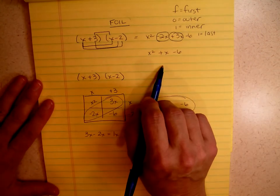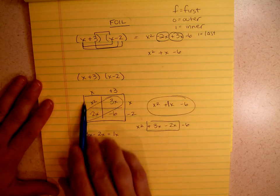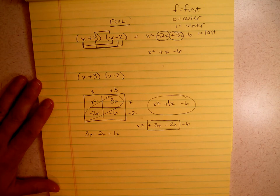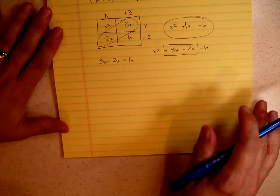So our answer is x squared plus x minus 6. That's exactly what we got from FOIL. I found it this way easier. If you find FOILing easier, go ahead and use FOILing. Don't switch. Let's try another problem.